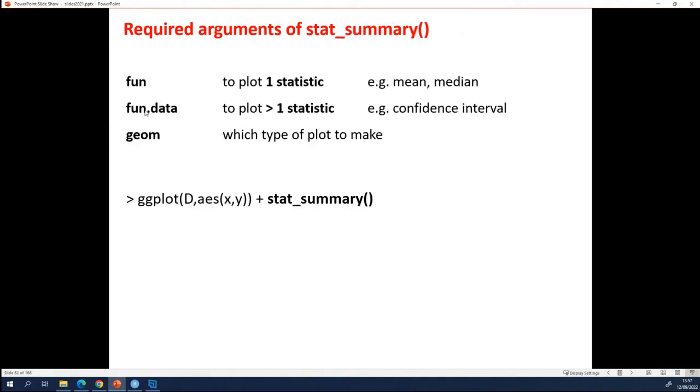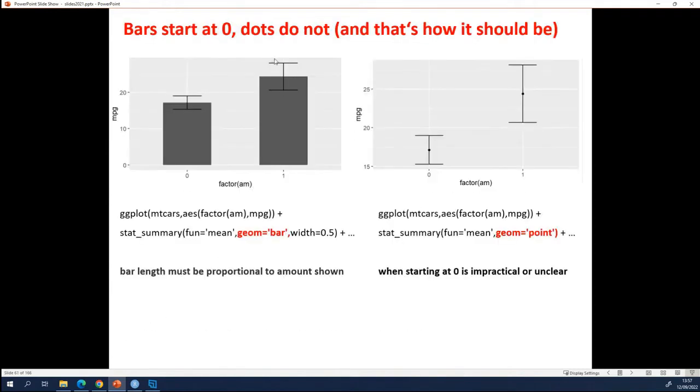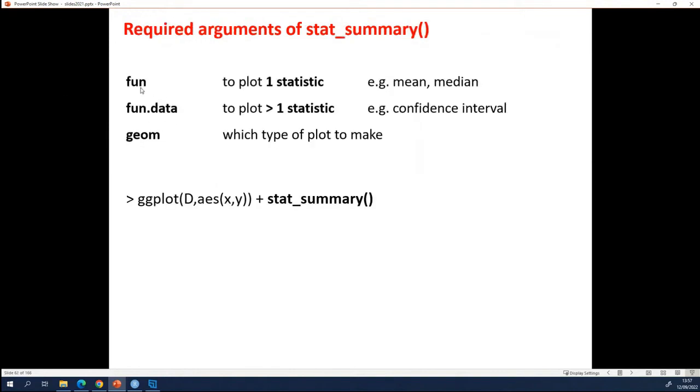If he needs to calculate more than one statistic, you have to use fun dot data. When is that the case? For instance, when you want to plot error bars. Error bars, like you see here, they contain two statistics or even three. For the error bar, you need to have the lower threshold, you need to have the center, and you need to have the upper threshold. That's more than one statistic. So if you want to make error bars, you have to set fun dot data.